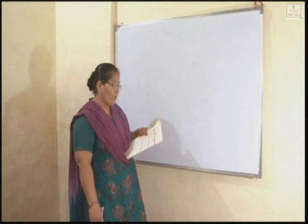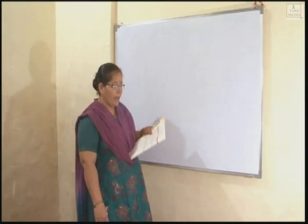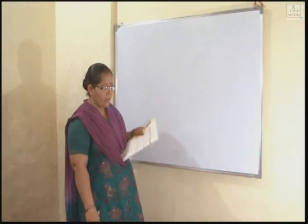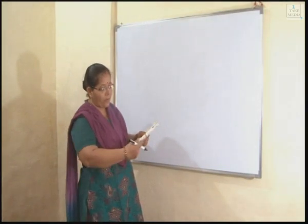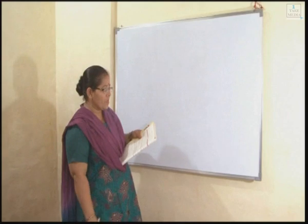Now we start Exercise 1.5, question number 1. Find 4 consecutive terms in an AP whose sum is 12 and the sum of 3rd and 4th term is 40.